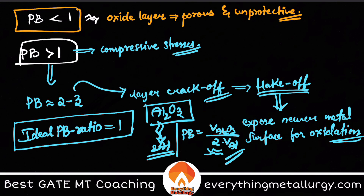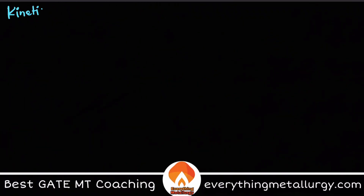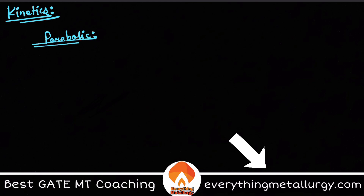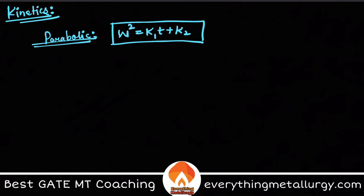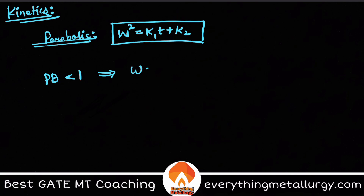The kinetics of this particular oxidation can also be studied. Usually it is parabolic in nature: w² = k₁t + k₂, where w is the weight gain and t is time. This applies when the oxide layer is non-porous and adhering well to the metal surface — the ideal case. If PB is less than 1 or greater than 2, the relationship becomes linear.